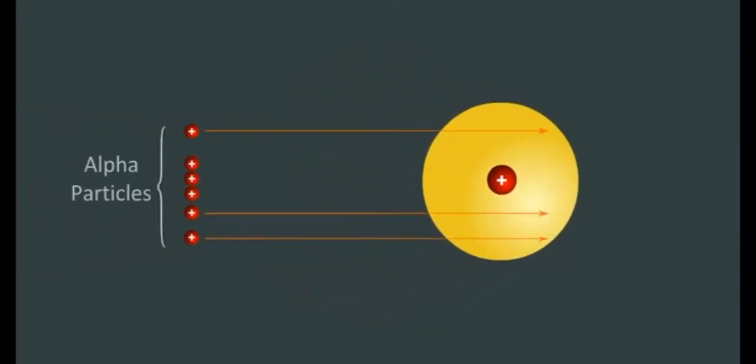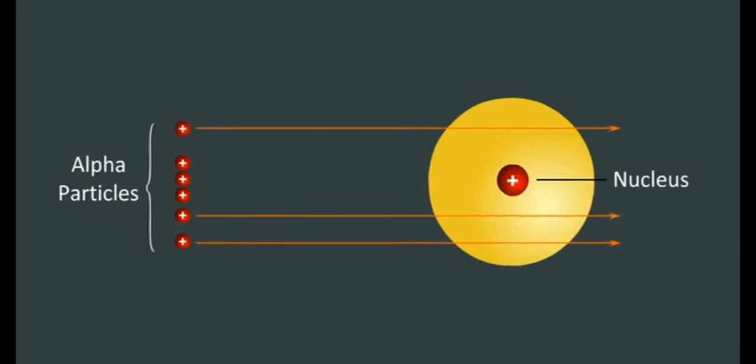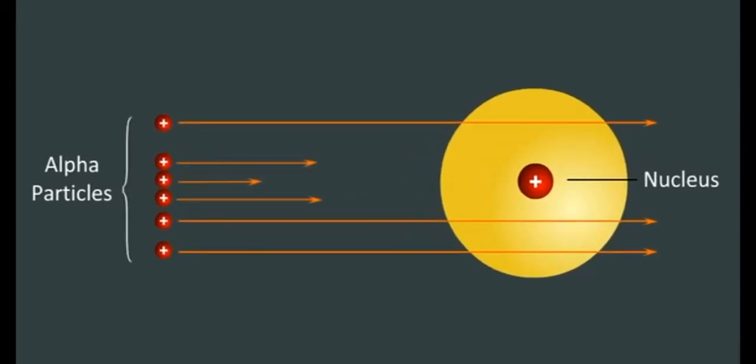Based on his observations, Rutherford concluded that most of the space in an atom is empty and there is a positively charged sphere at the center of the atom, which he described as nucleus around which electrons are orbiting in an atom.